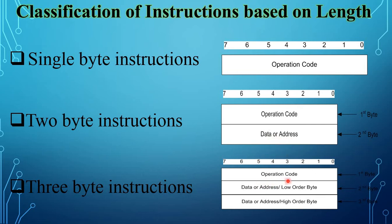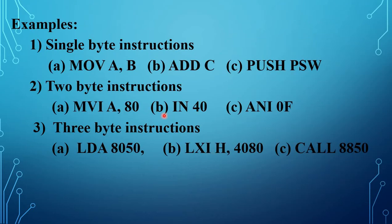The 3-byte instruction contains 3 bytes. The first byte contains the operation code. The second byte contains the low-order 8-bit data or low-order 8-bit address. The third byte contains the high-order 8-bit data or high-order 8-bit address. These are the three types of instructions classified by length.